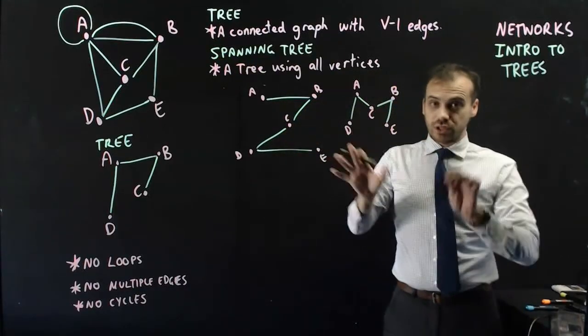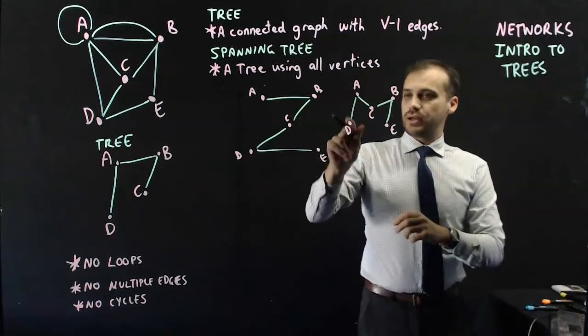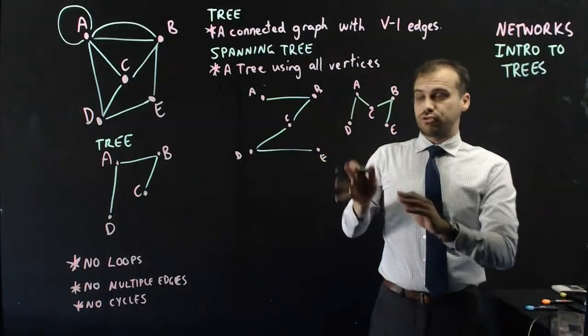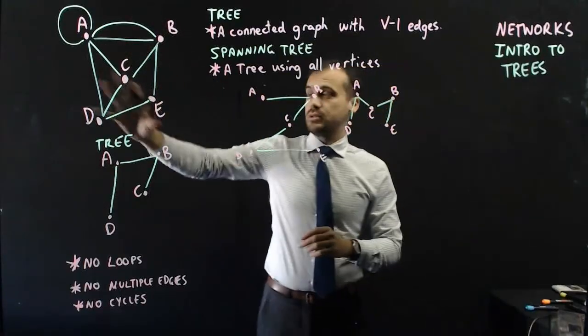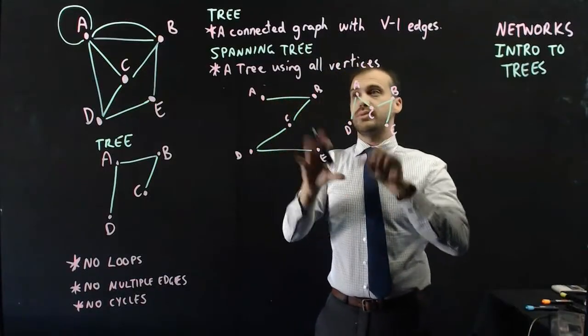And you can see I'm using totally different vertices or a lot of different vertices, but I've still got a spanning tree of the same graph. So same graph, we get multiple spanning trees from that.